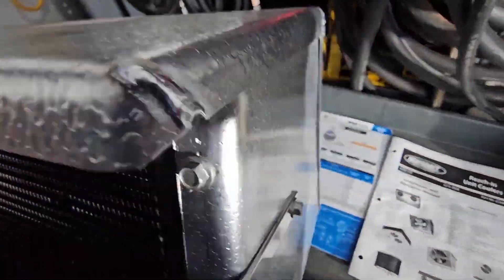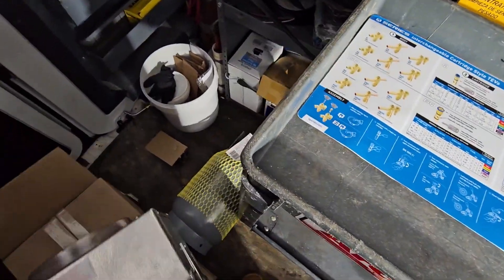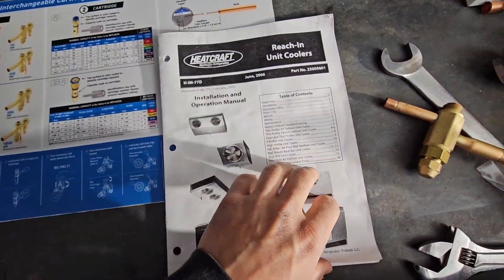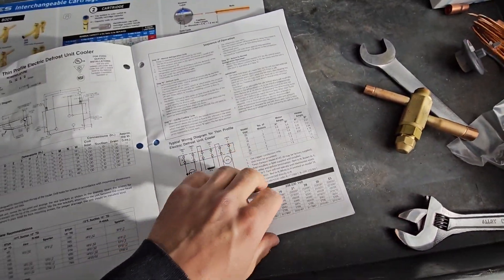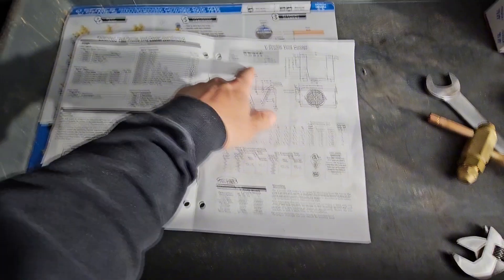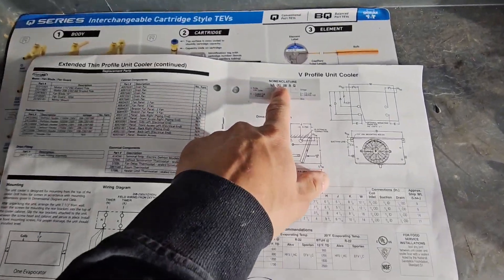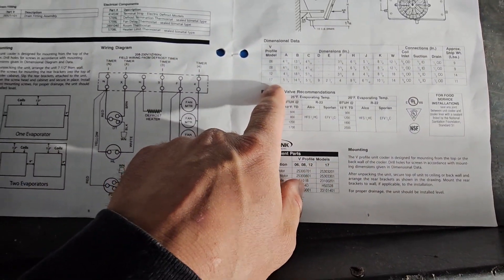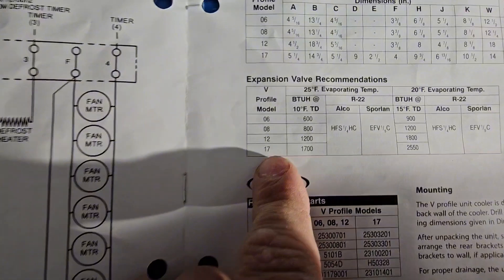Basically they come without a TXV, so you gotta put your own TXV. So you gotta open up the manual and I'm going to find the VAK 17.